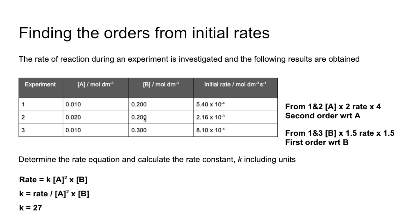So looking at the units for K now, I mustn't forget those. So the units of K, rate over concentration squared multiplied by concentration. We can cancel one lot of mol dm⁻³, top and bottom.